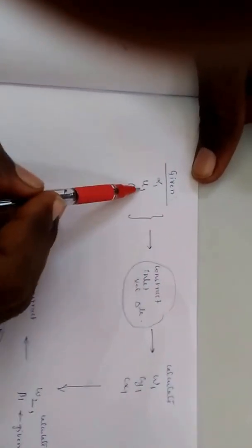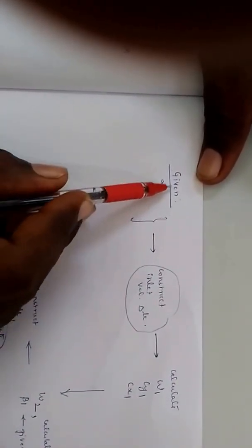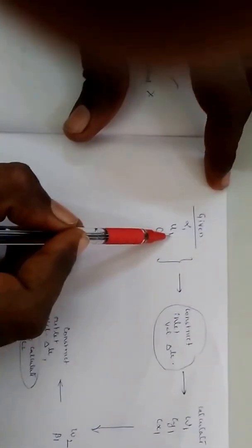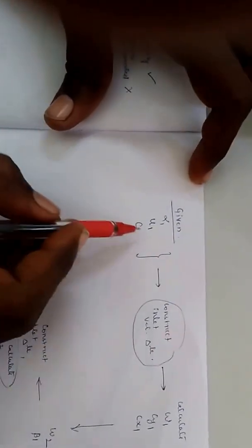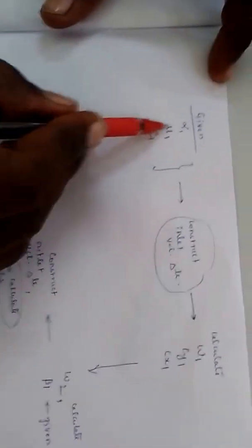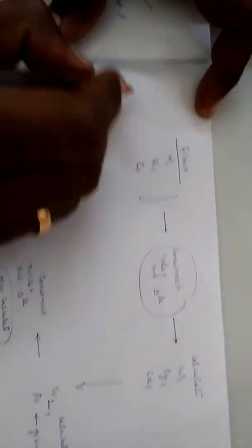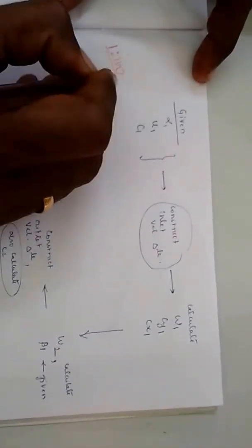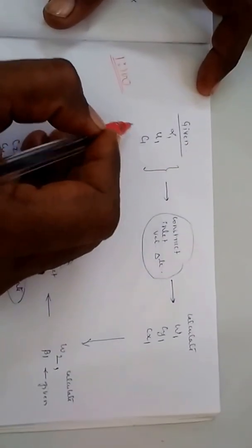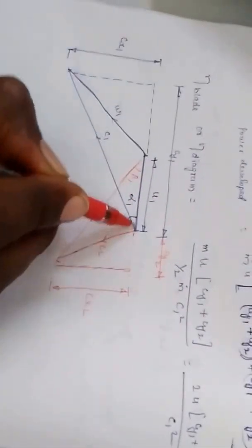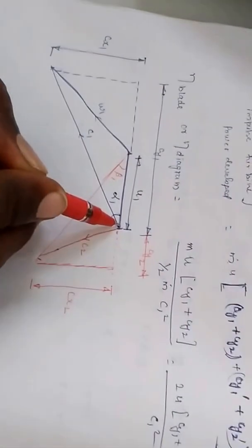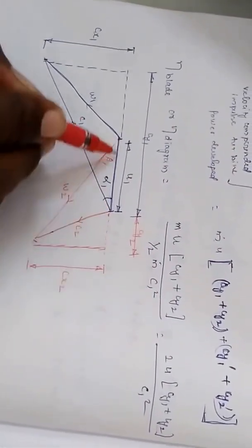The inlet velocity triangle is constructed using U1, C1, and alpha1. For drawing this triangle, we have to assume a suitable scale. For example, if the blade velocity is specified as 600 meters per second, we can assume a scale of 1 to 100, so 600 meters per second is represented as 6 centimeters. To start, draw a horizontal line which represents U, the blade velocity, at the appropriate length according to your chosen scale.